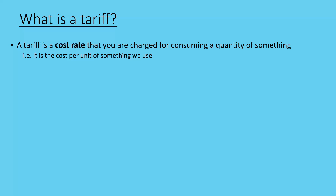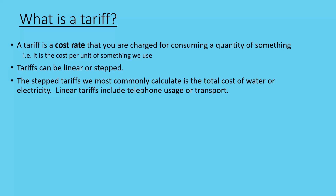A tariff is a cost rate that you are charged for consuming a quantity of something — for example, the cost per unit of something that we use, like electricity or water or some other commodity. Tariffs have two forms: one is linear and the other is stepped. Linear is the simpler of the two, but step tariffs are the most commonly used when calculating the cost of water or electricity, whereas linear tariffs include things like telephone usage or transport.